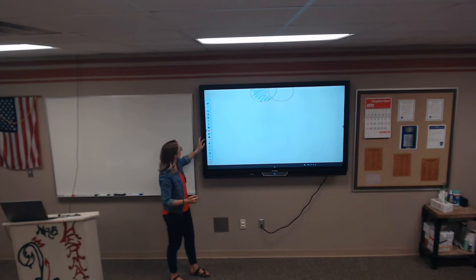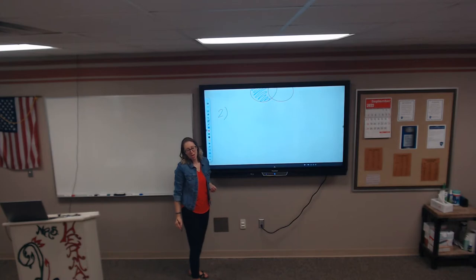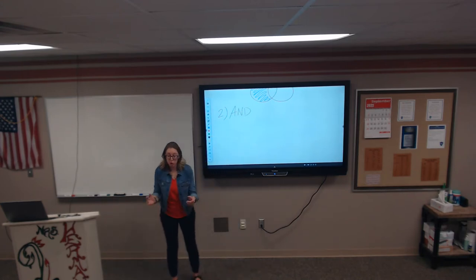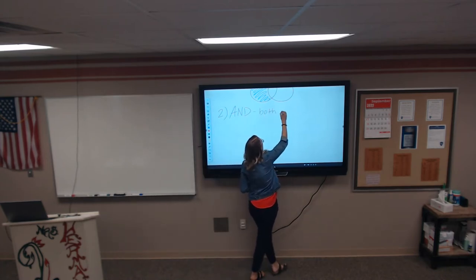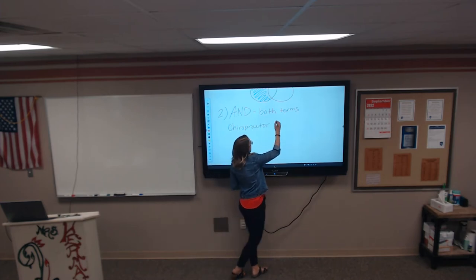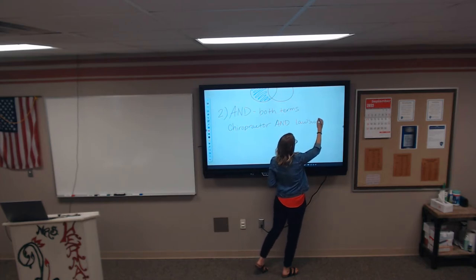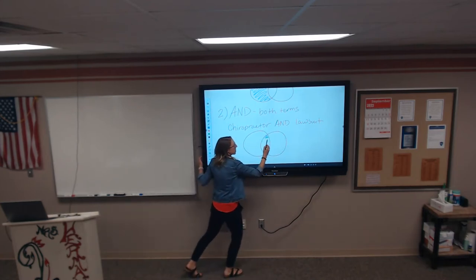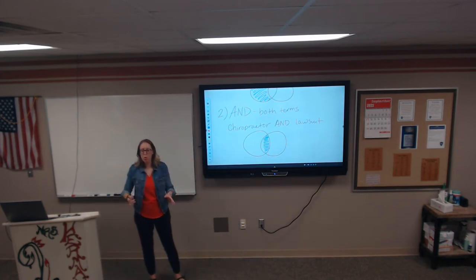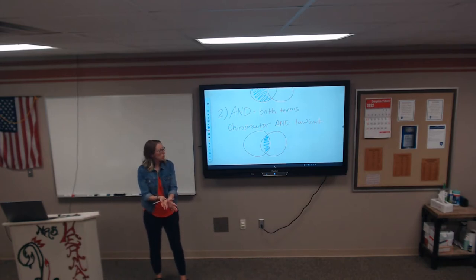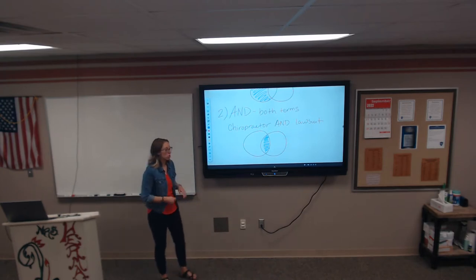Number two is my personal favorite Boolean operator — it is AND. AND is like a super limiter because what it tells the database is that both terms have to be present. So if I were to search chiropractor AND lawsuit, I'm telling the database: I only want to see articles that have both the word chiropractor and the word lawsuit in them. I'm really limiting and narrowing the results of my search using AND, which is why it's my favorite. I always use the AND Boolean operator when I'm doing searches.